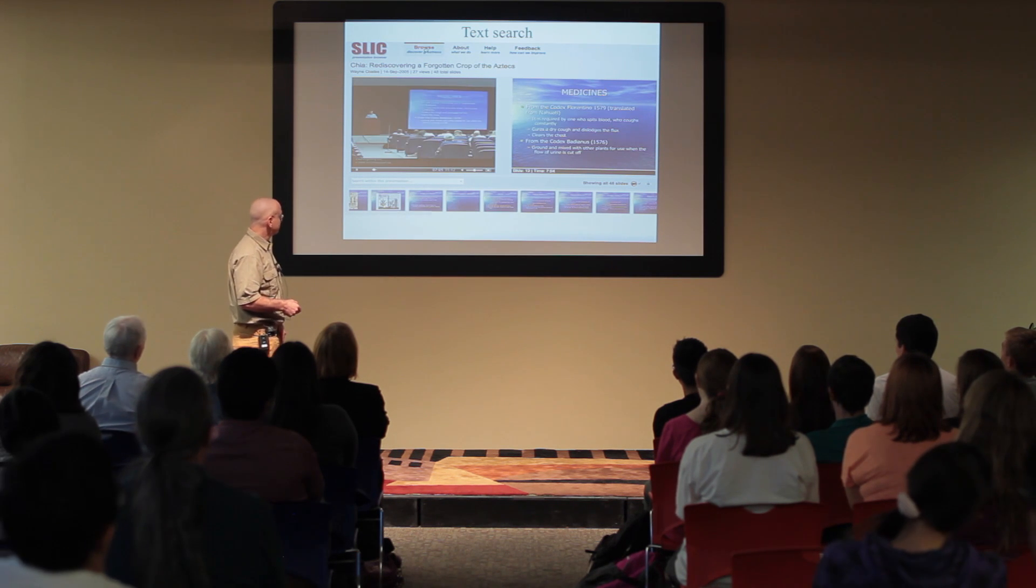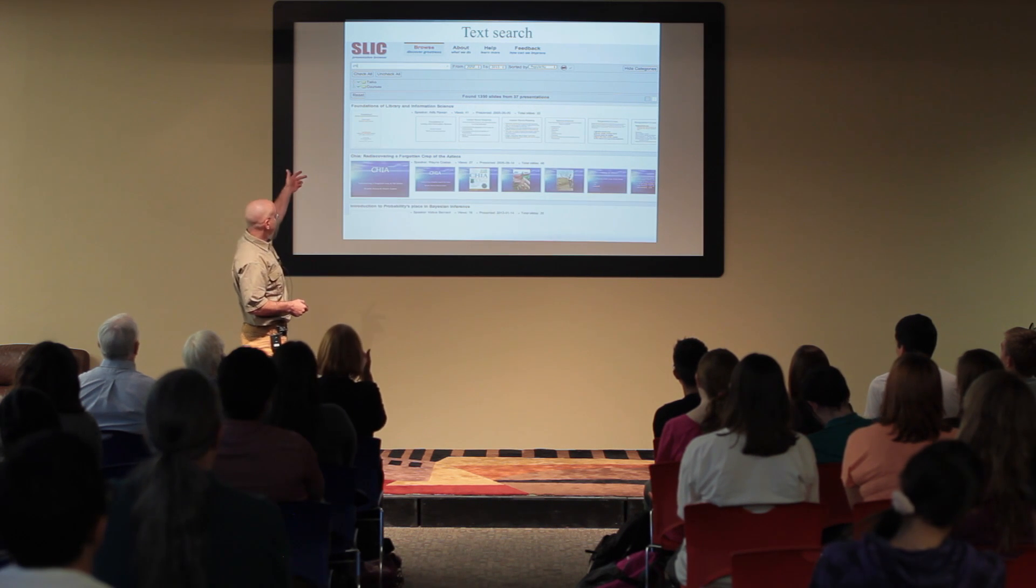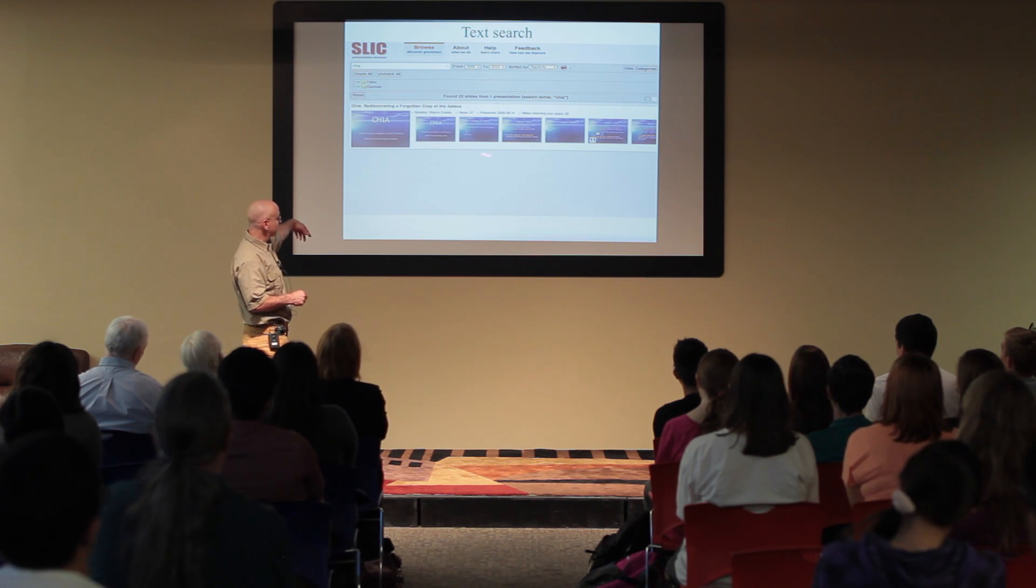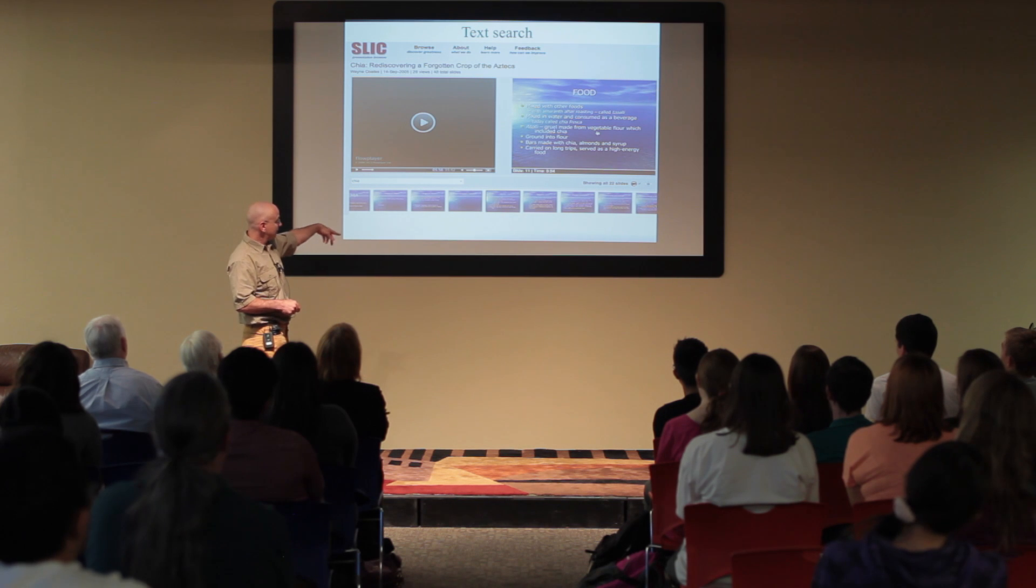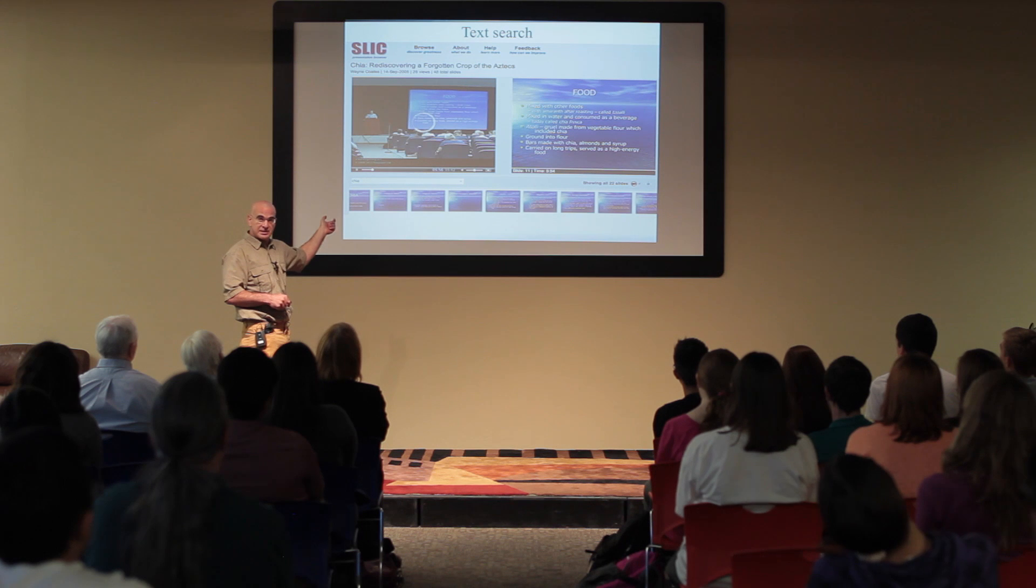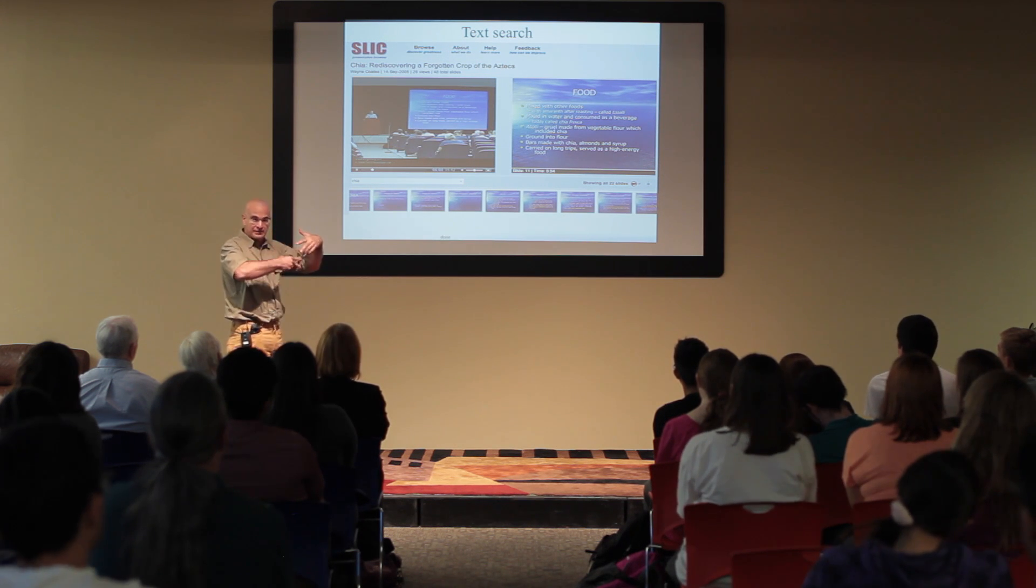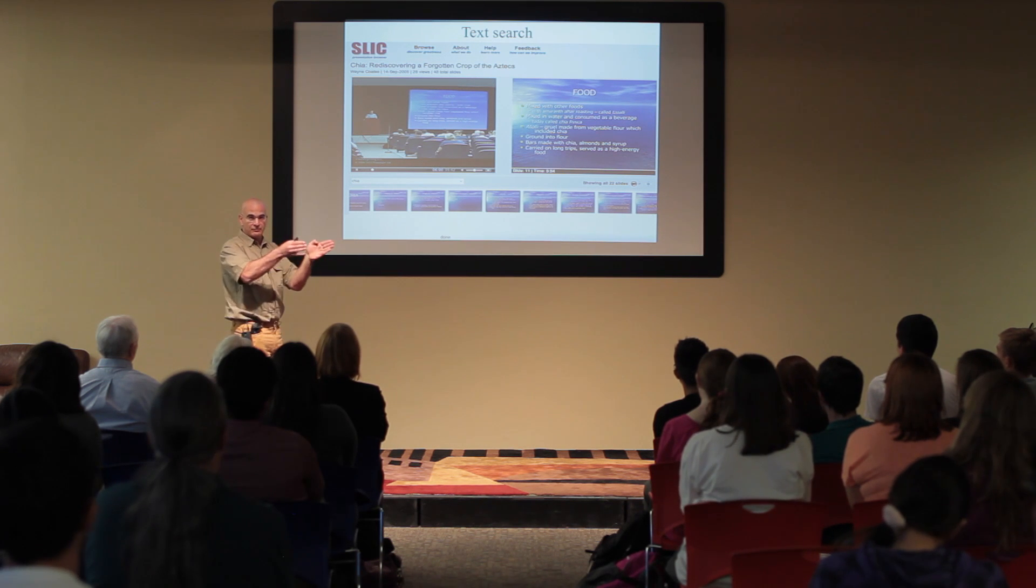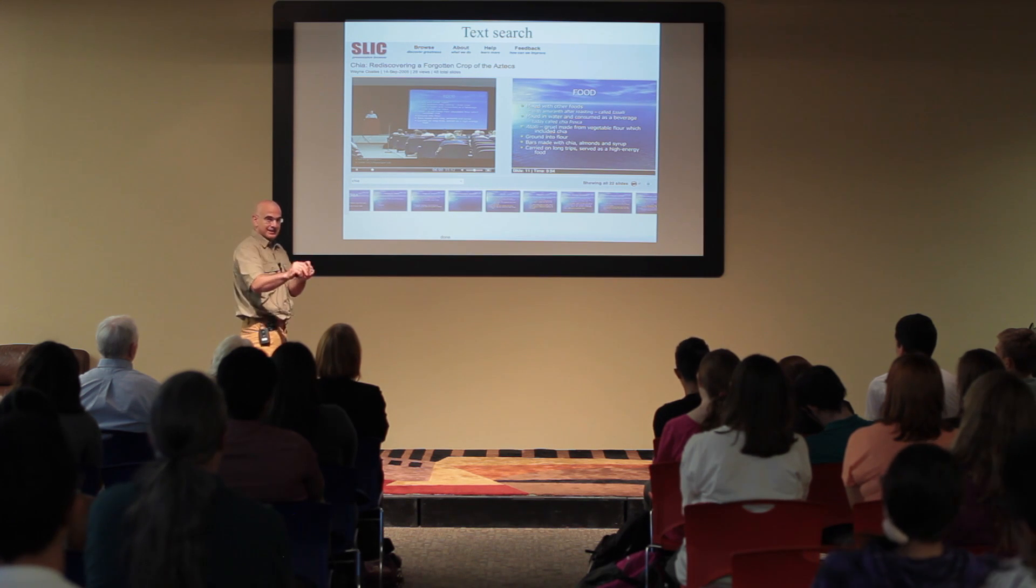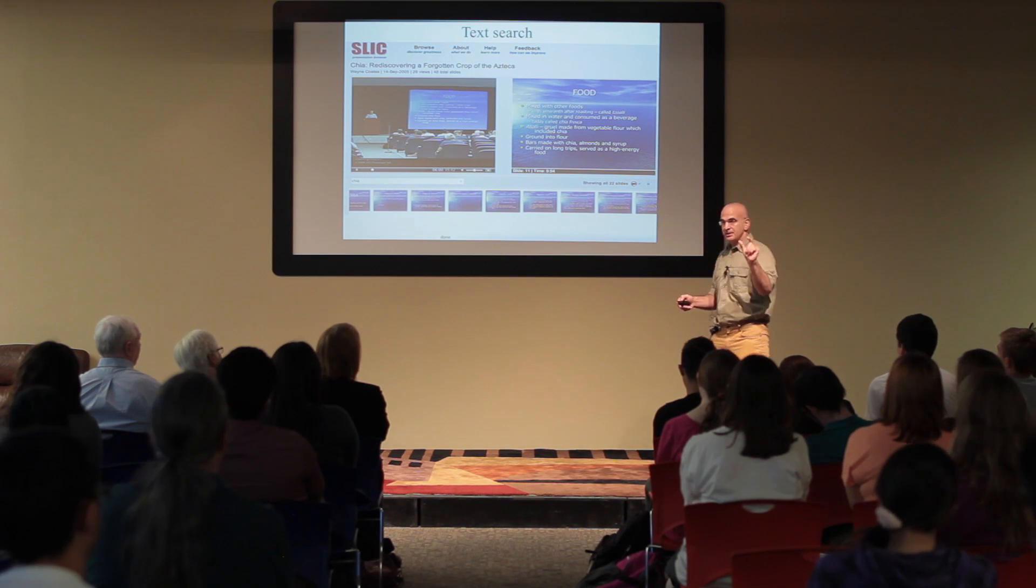Here is the immediate application: text search. Since I know what's the text of each slide, I can go to the text search, type 'chia' in this case, and up comes only slides that contain chia in them. I can pick one of these slides and start watching the video from the point where this particular slide is used. It's useful for a video of one talk, but think about an archive of a whole course or many courses in the university.